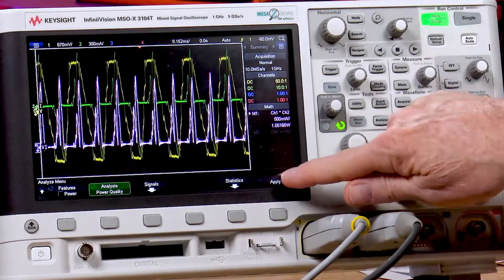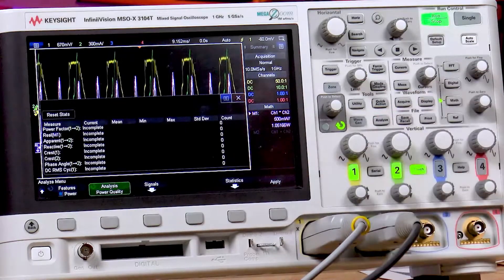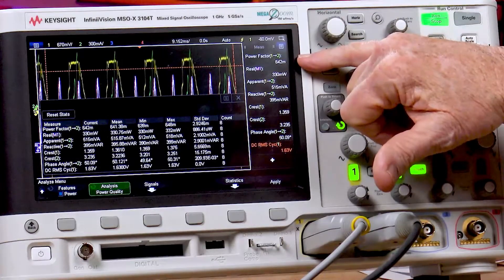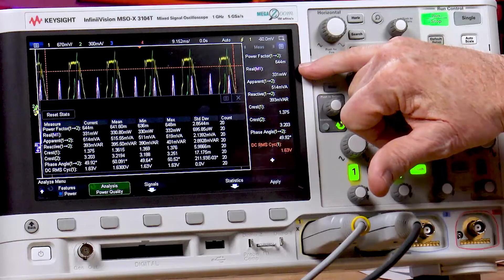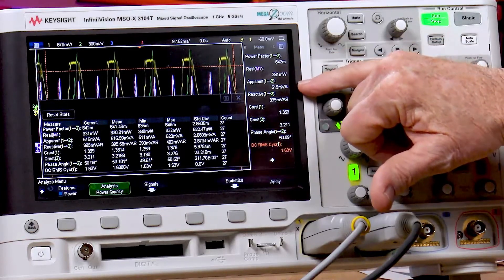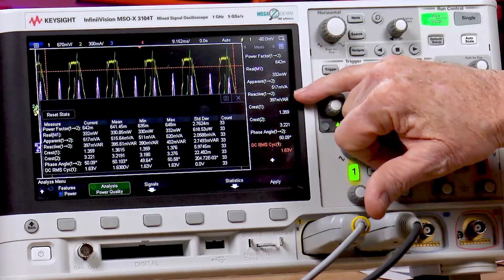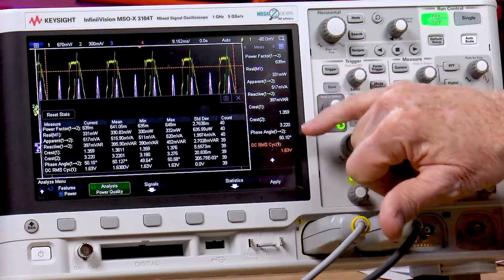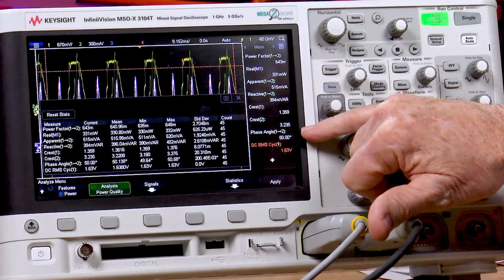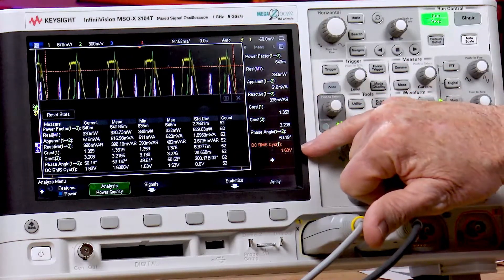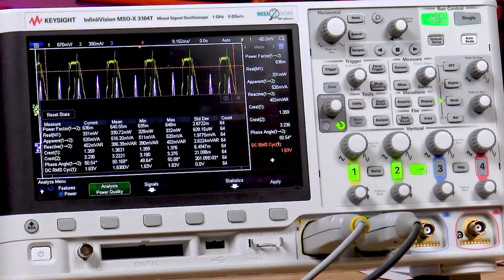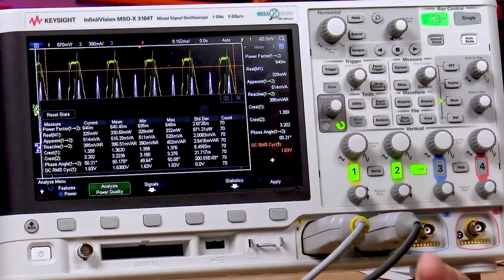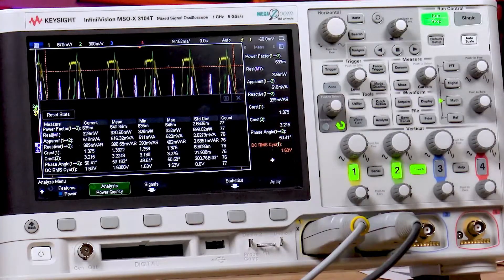Now if I select Apply, it automatically measures the power factor, real power in this case about 330 milliwatts, apparent power, reactive power, crest factor of voltage, crest factor of current, phase angle, and the RMS, which it says is only about 1.63 volts. There you see how easy it is to set up and measure power quality.